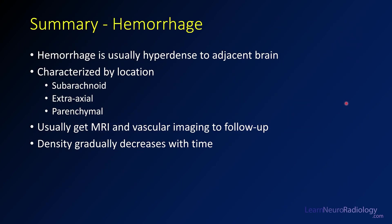In summary: hemorrhage is hyperdense to the adjacent brain and gradually decreases over time. We characterize it by location. Subarachnoid hemorrhage is typically caused by trauma or aneurysm. Extraaxial hemorrhage is more associated with anticoagulation, old age, and trauma. Parenchymal hemorrhage is frequently associated with hypertension. The location tells you what the likely cause is. Almost all of these patients will get vascular imaging and MRI to look for an underlying lesion, and the density of these hemorrhages decreases with time until it's closer to CSF.